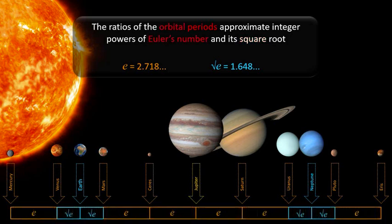Therefore, planets and large planetoids have orbital periods separated by Euler's number and its roots. If you still have patience, I would like to add something about Euler's number.